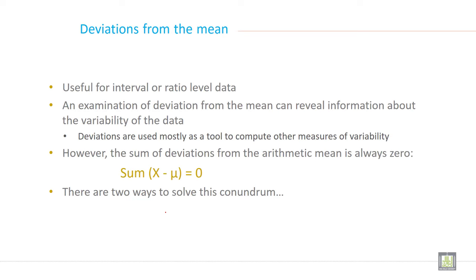Deviation from the mean. Useful for interval or ratio level data. An examination of deviation from the mean can reveal information about the variability of the data. Deviations are used mostly as a tool to compute other measure of variability. However, the sum of deviation from the arithmetic mean is always zero.